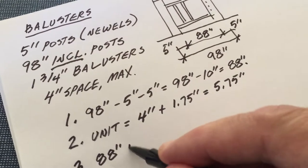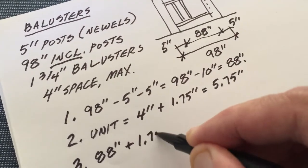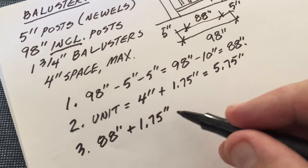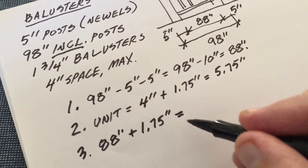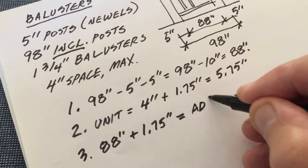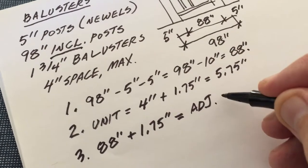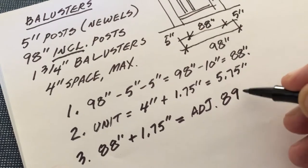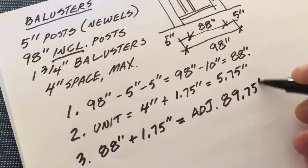Excuse me, I add my ghost baluster distance of 1.75 so that I can divide a whole into whole units, meaning that my adjusted length equals 89.75 inches.